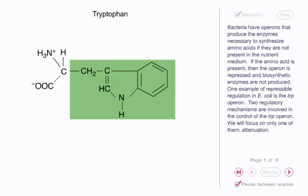One example of repressible regulation in E. coli is the trp operon. Two regulatory mechanisms are involved in the control of the trp operon. We will focus on only one of them, attenuation.